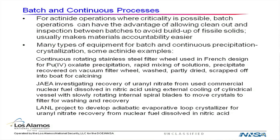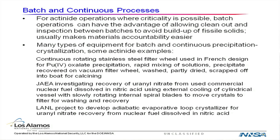For actinide operations where criticality is possible — for example with plutonium or enriched uranium — batch operations have an advantage in that you can allow clean-out and inspection between batches to avoid building up a critical mass. It also makes materials accountability easier. So we tend to do batch operations in a plutonium facility. But there are many types of equipment for batch and continuous precipitation and crystallization operations.